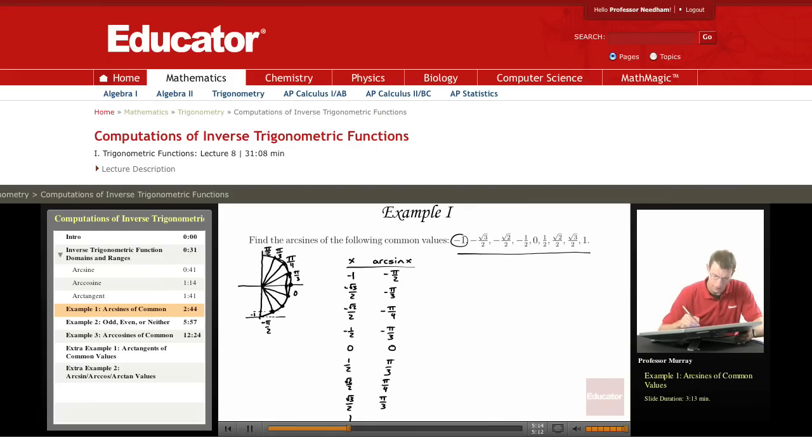And finally, we know that the sine of π over 2 is 1, so the arcsine of 1 is π over 2.